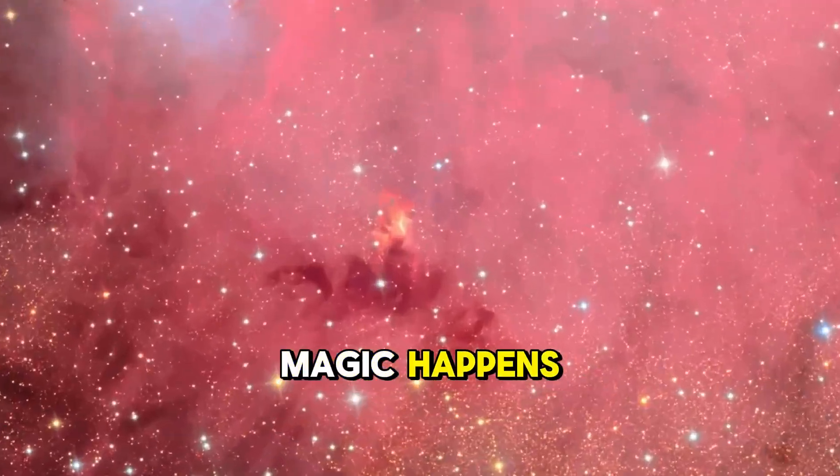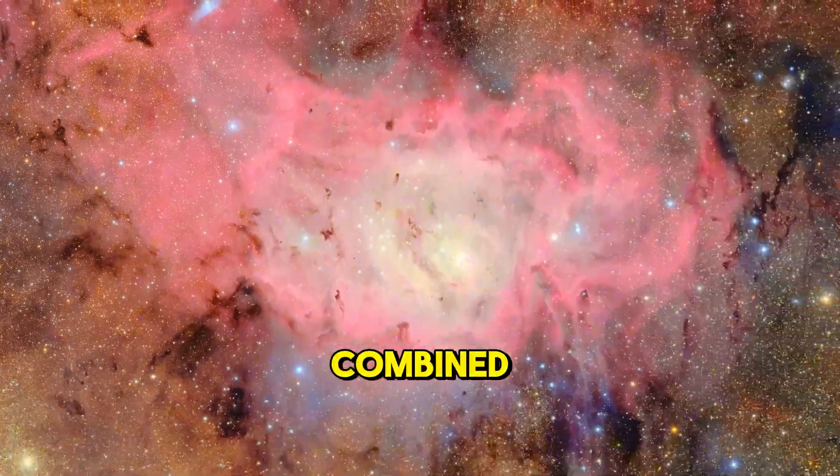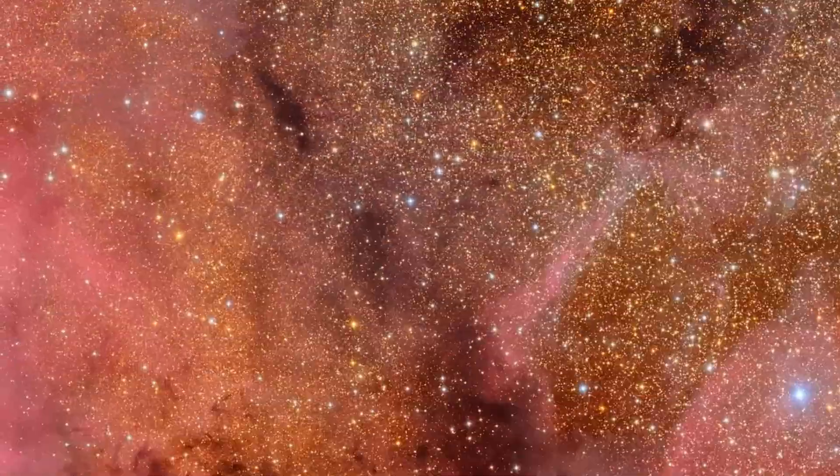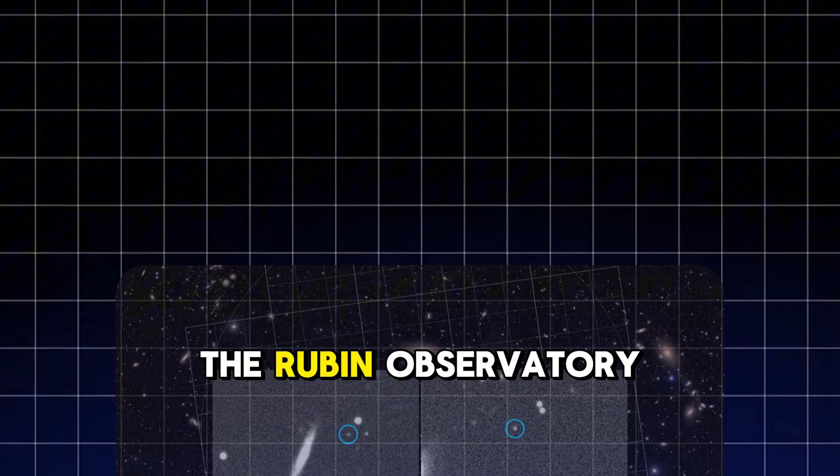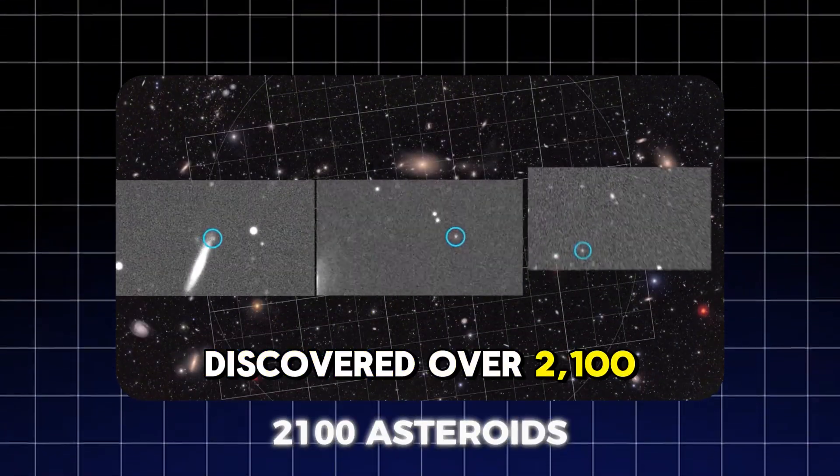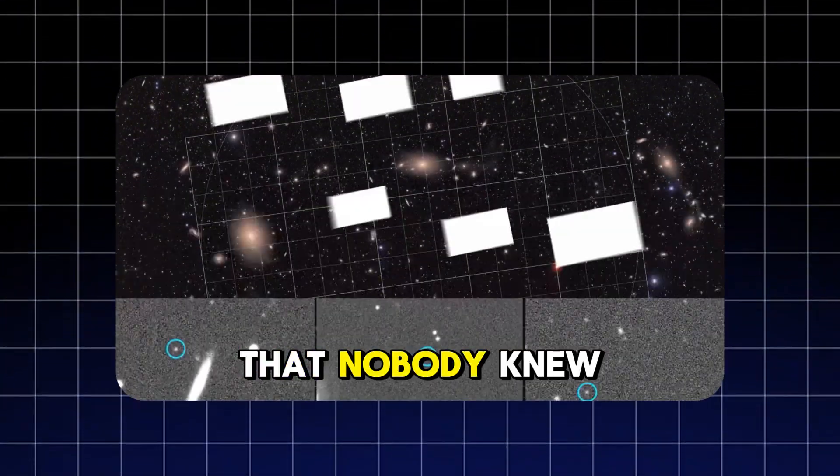But the real magic happens when all those individual photos get combined into something extraordinary. In just 10 hours of testing, the Rubin Observatory discovered over 2,100 asteroids that nobody knew existed.